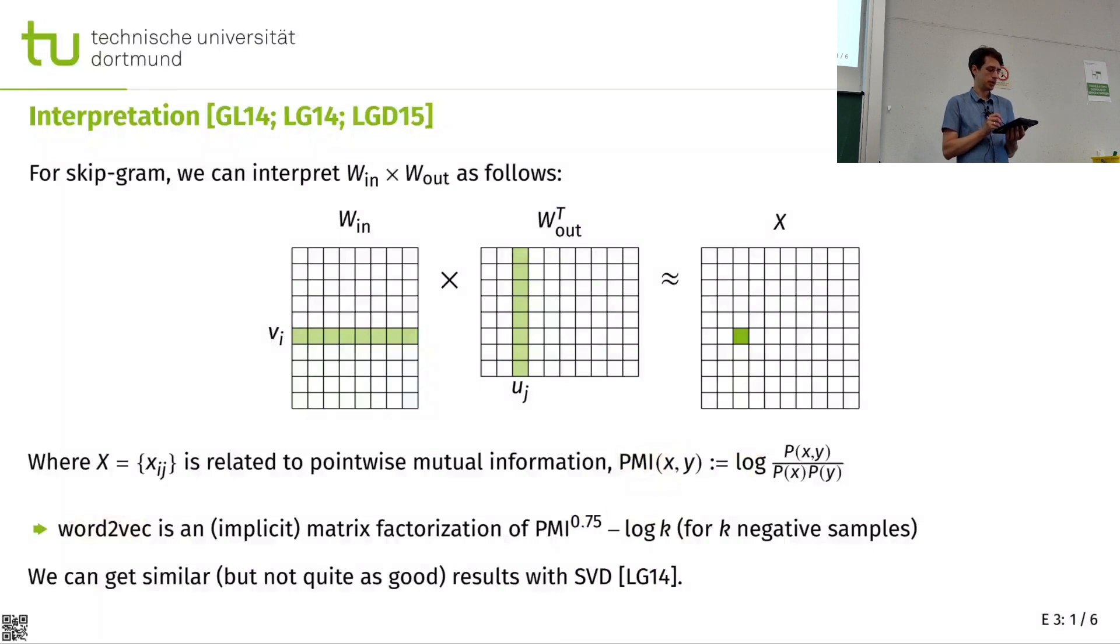So it turns out that we would have to put in a power of 3 divided by 4 in here and log k if we're doing negative sampling with k negative samples. And then we get this negative skip-gram with negative sampling word2vec version. But it is an implicit matrix factorization. We're not doing it explicit. But we get similar results with SVD. Not quite as good, but still pretty good.